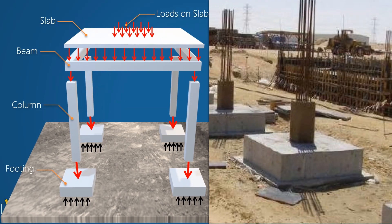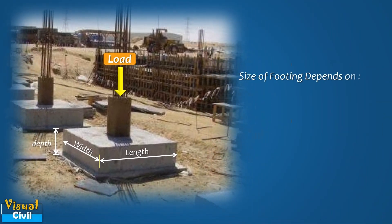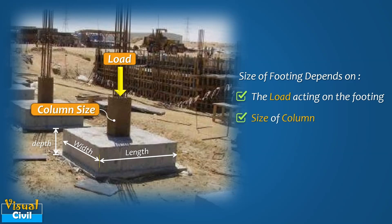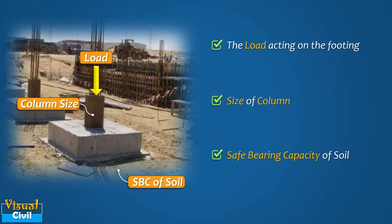Footings are executed first in the construction sequence, therefore it is very important to provide an adequate size of footing to carry the structural load. Generally, the size of the footing depends on three items: first, the load acting on the footing; second, the size of the column; and third, the safe bearing capacity of the soil.